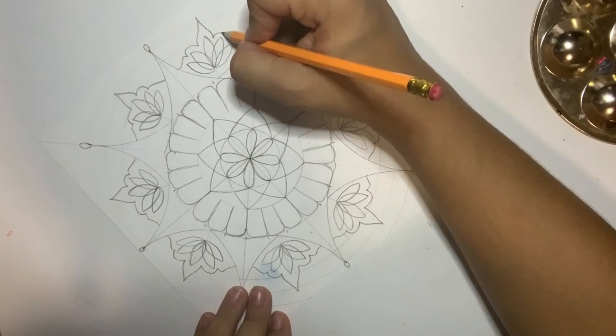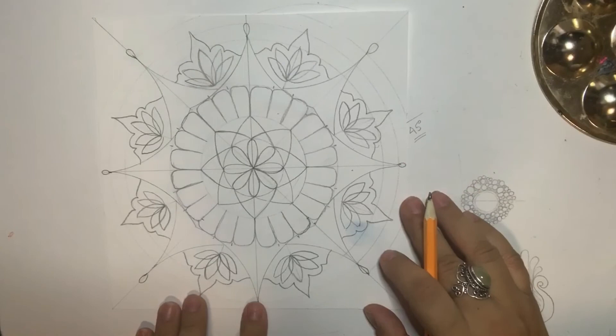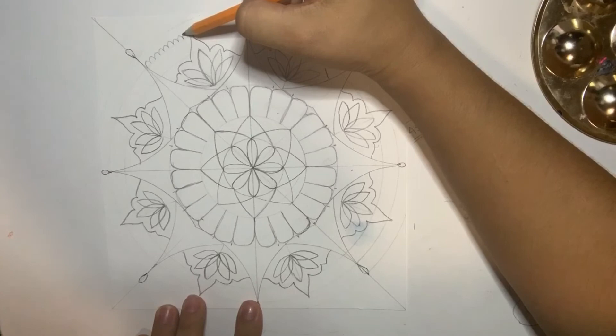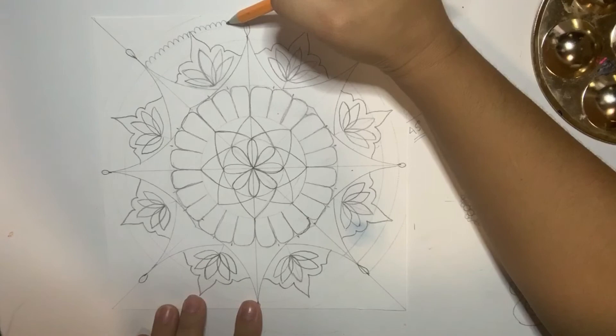We are almost done here, and the last thing that I want to do, it's all about flowers, is to start drawing little petals just like this that are going to be the last petals that we're going to draw.